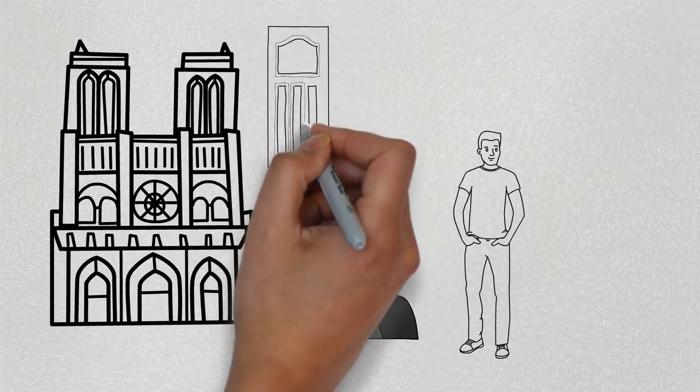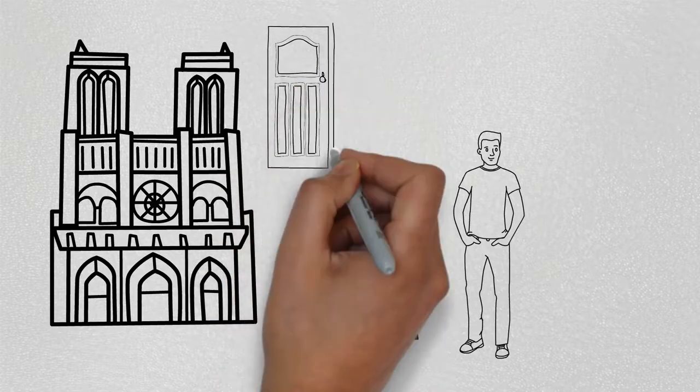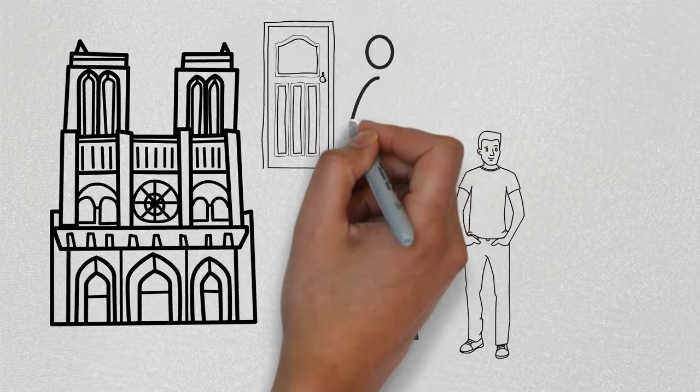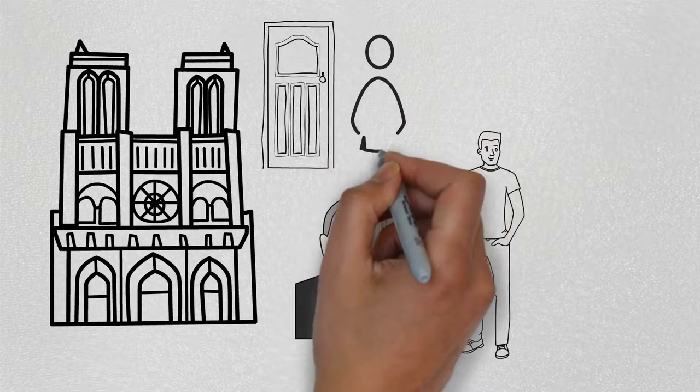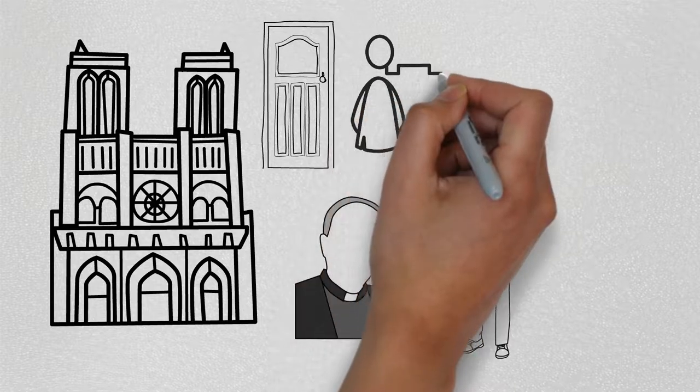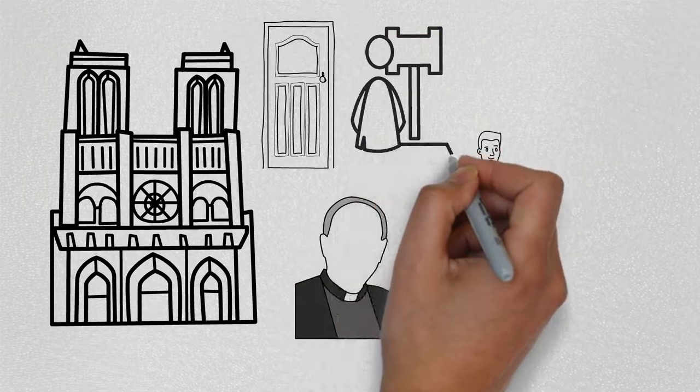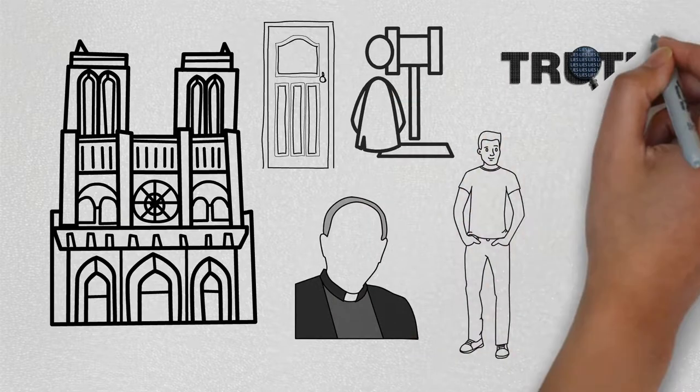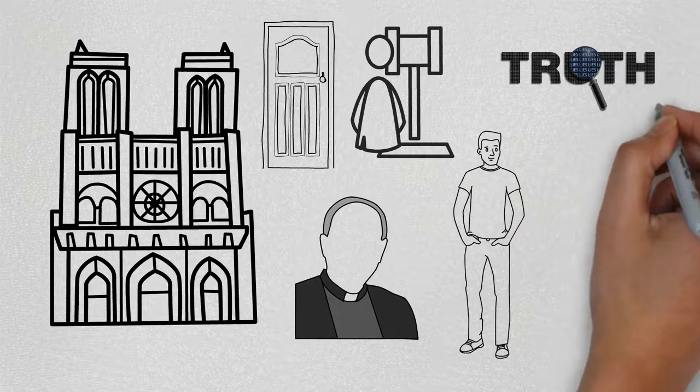The priest tells K a parable about a man who spends his entire life waiting to enter a door to the law, only to learn from the guard in front of the door that no one else has tried to enter because the door was made especially for the man. K believes the parable is about how the man is deceived, while the priest is more sympathetic to the guard.